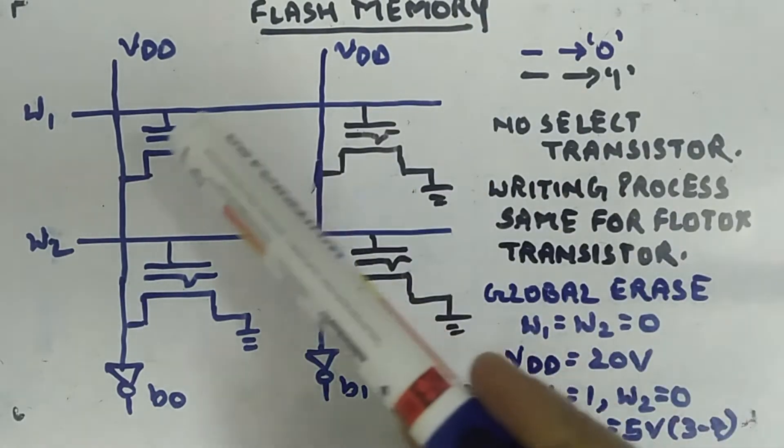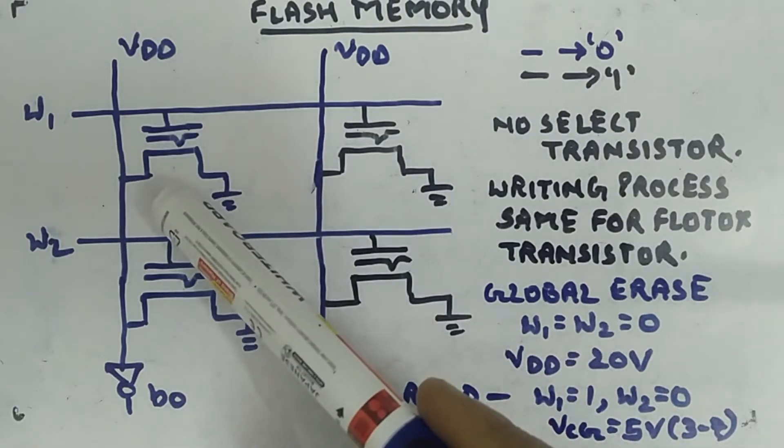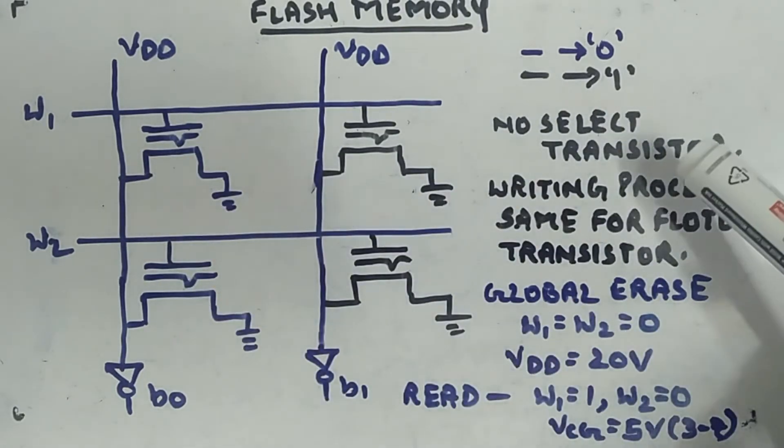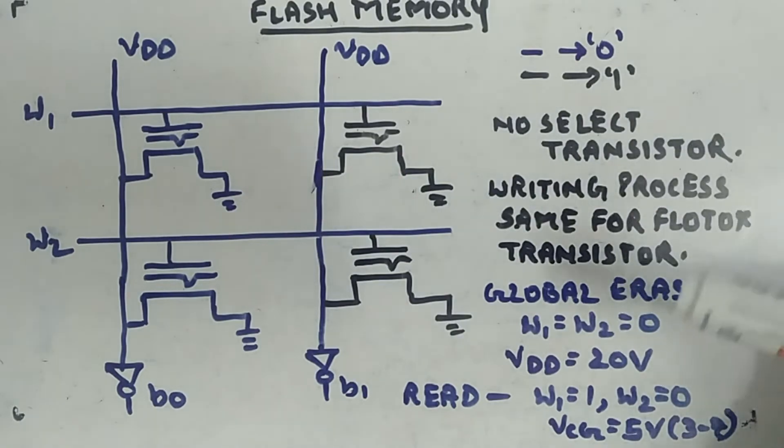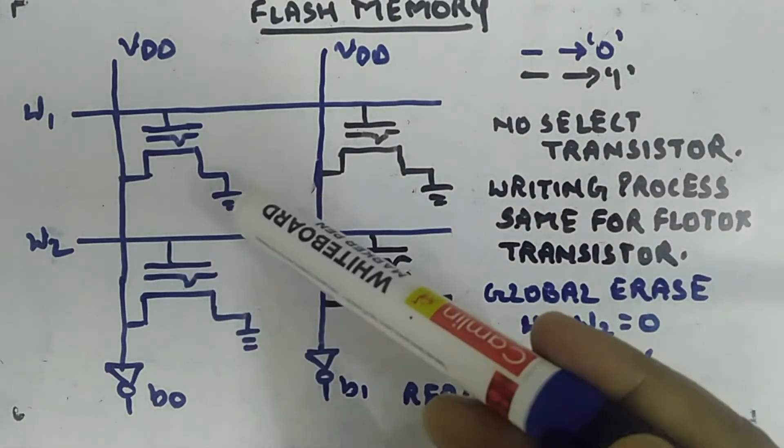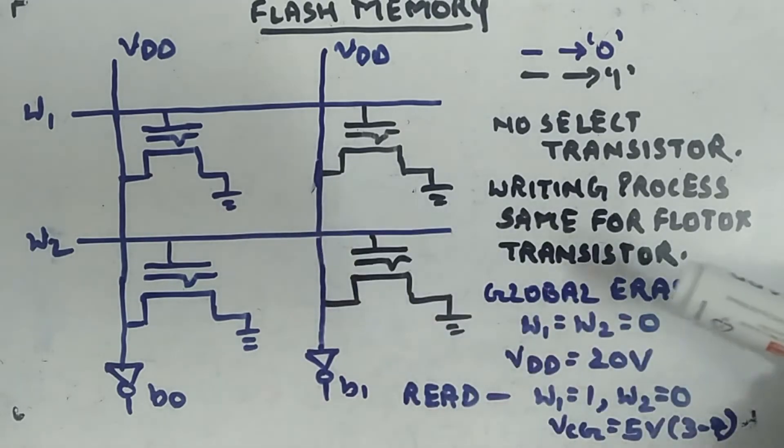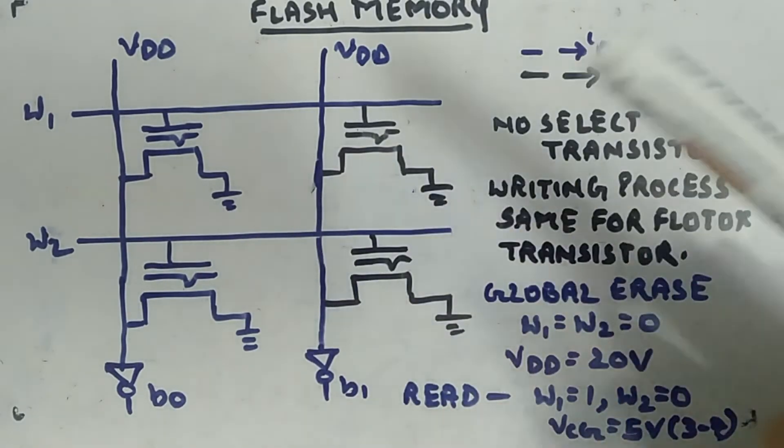Per cell it has only one transistor - the flotox transistor. No select transistor is there. The benefits are: first, you get high density, meaning per cell there is only one transistor. Second, you have global erase functionality. It's like EEPROM but with global erase.